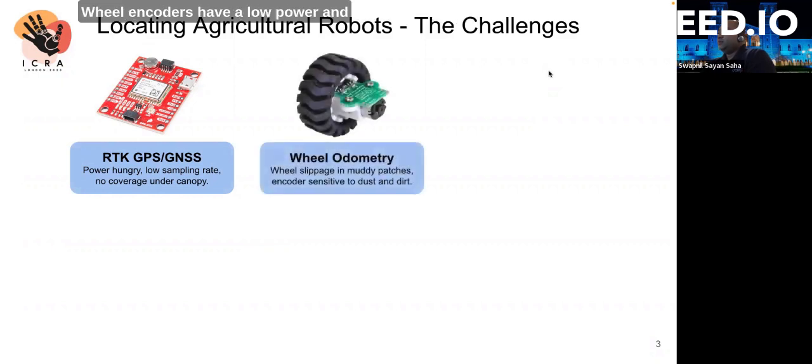Wheel encoders have a low power and volume footprint, but suffer from wheel slippage, dust, and dirt common in farms.